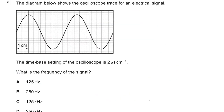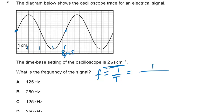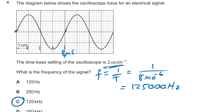Question five: an oscilloscope trace with a time-base setting of 2 microseconds per centimetre. Frequency equals 1 divided by time period. The wave spans 4 squares, each 2 microseconds, giving a time period of 8 microseconds. So 1 ÷ (8 × 10⁻⁶) = 125,000 Hz or 125 kHz. The answer is C.